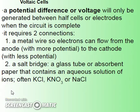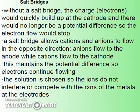Potential difference or voltage is only generated between half cells when the circuit is complete, meaning you need a metal wire for electron flow and two different half cells. To keep it going, you also need a salt bridge — a glass tube or absorbent paper containing an aqueous solution of ions, such as KCl, potassium nitrate, or sodium chloride. The salt bridge allows anions to flow to the anode, since electrons are flowing away from it, maintaining the negative charge there. Meanwhile, cations flow to the cathode as ions are reduced to neutral metal, maintaining the potential difference so electrons keep flowing.